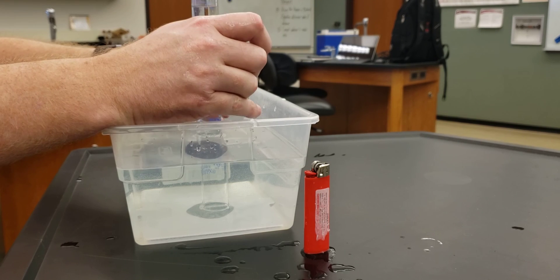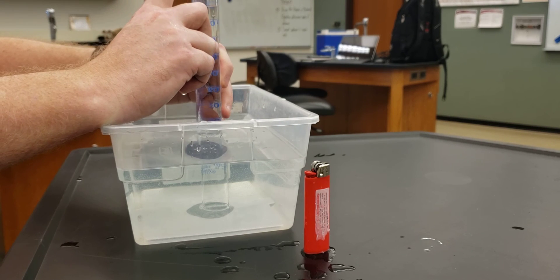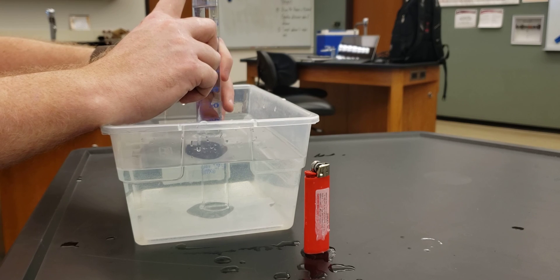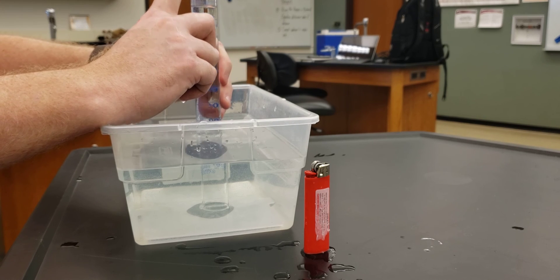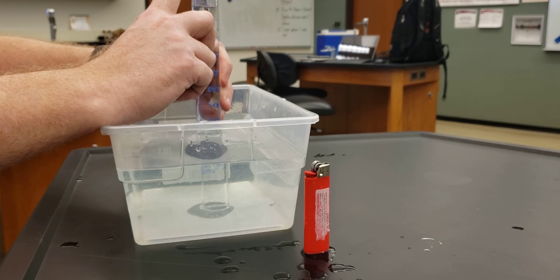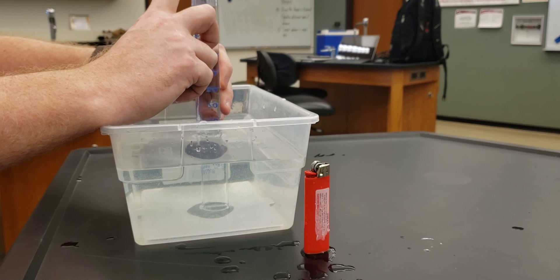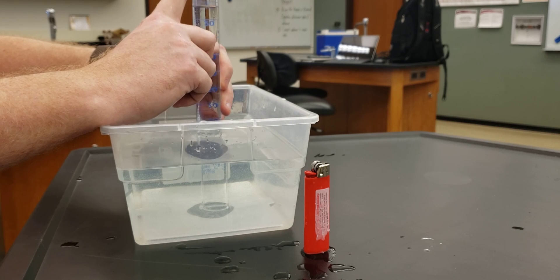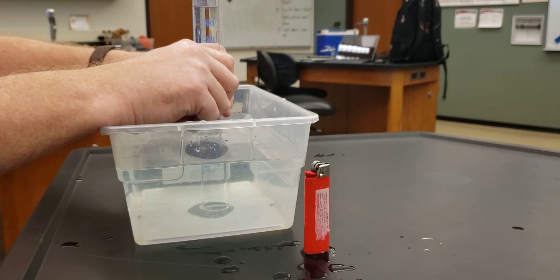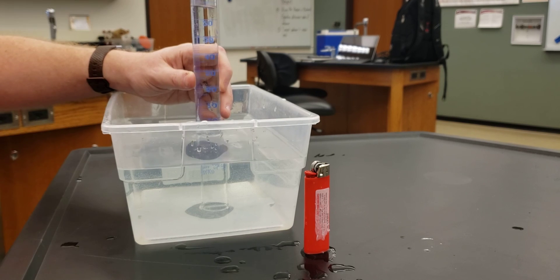You're going to take the temperature of the water to determine the vapor pressure of the water above the water in the butane, and then subtract that from the pressure you get to get the pressure of the butane. All right? So that's how you do the lab on molar mass of butane.